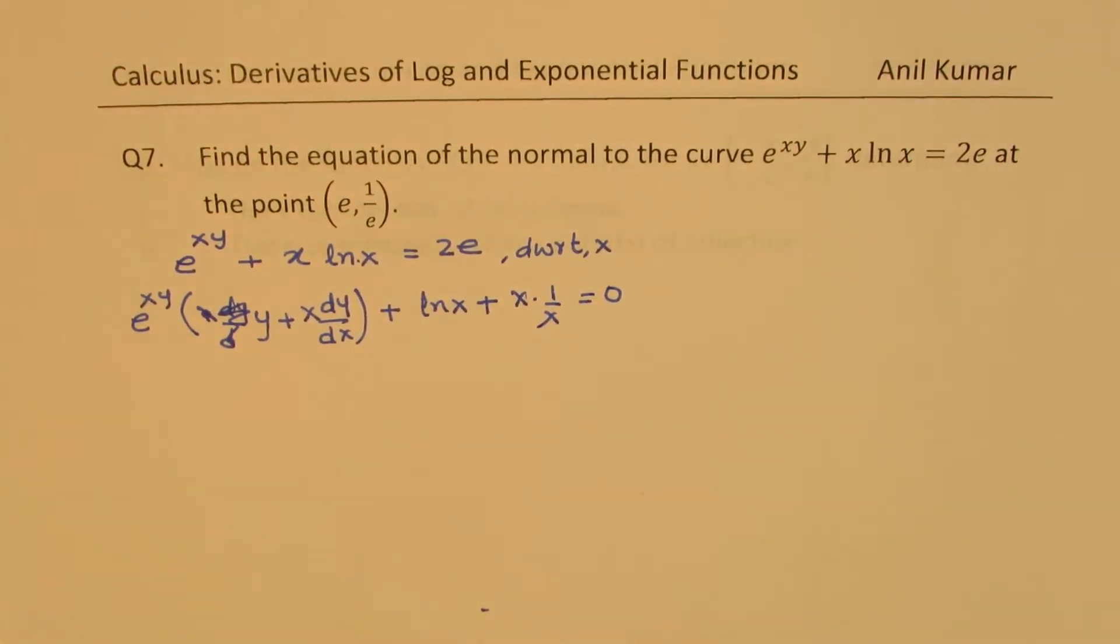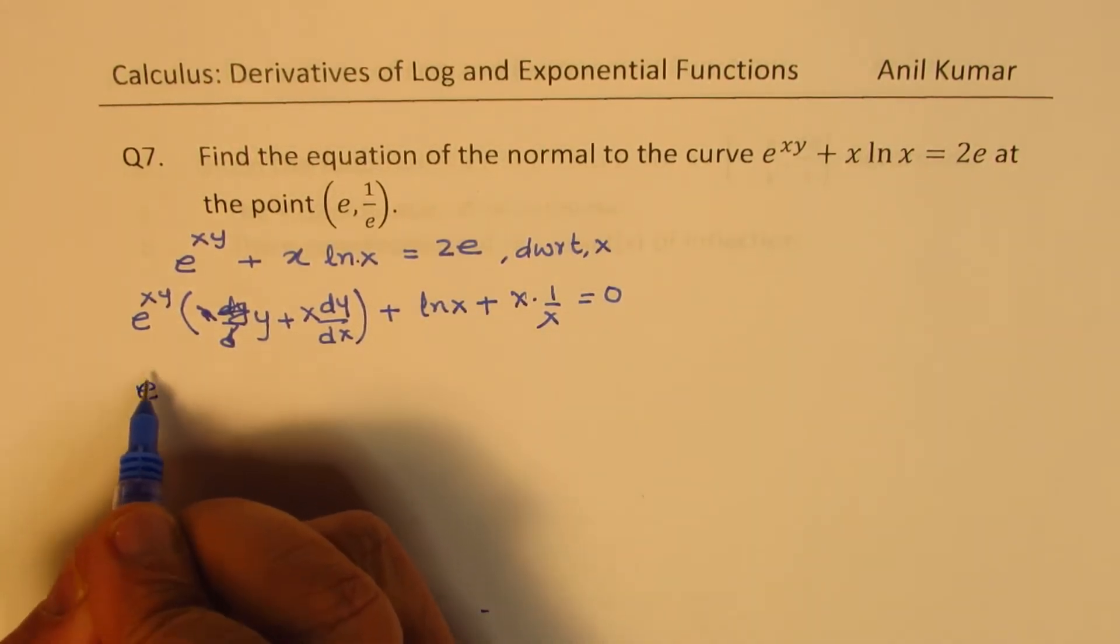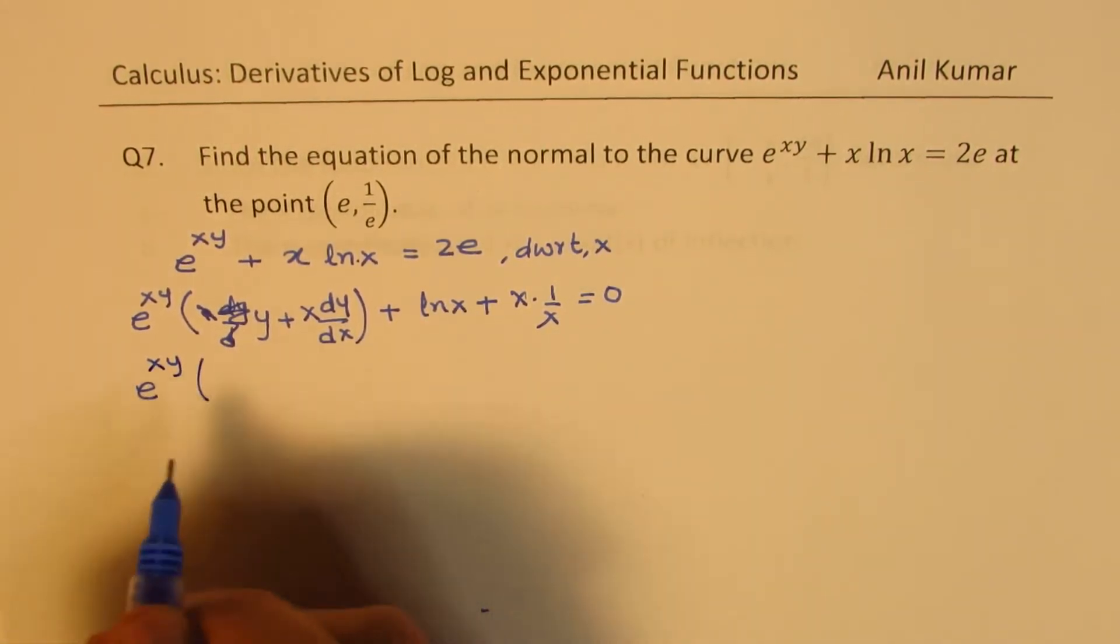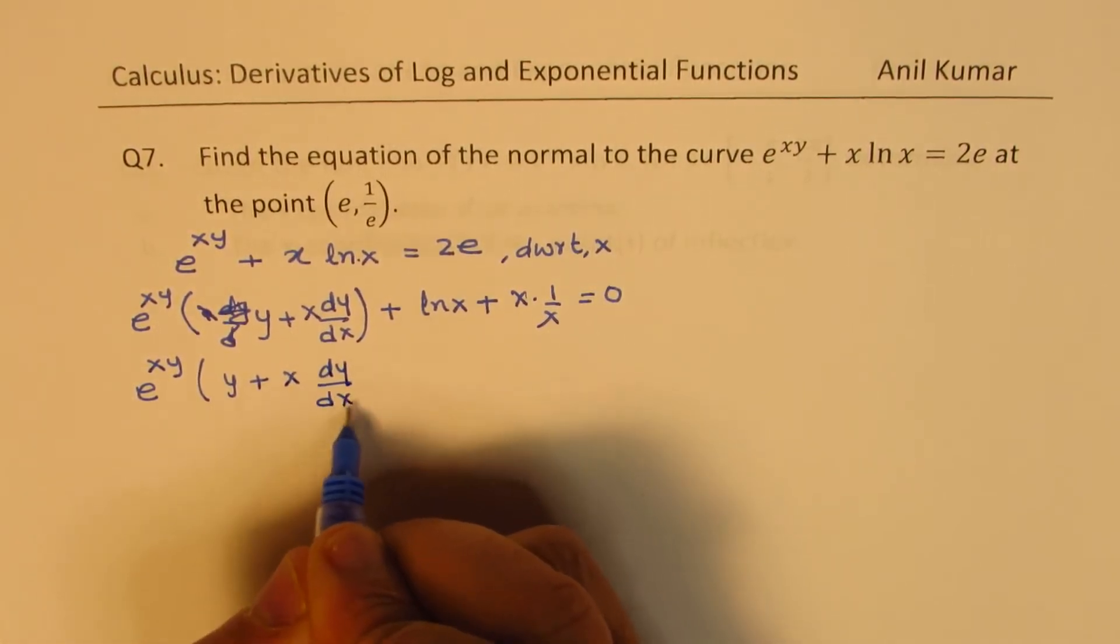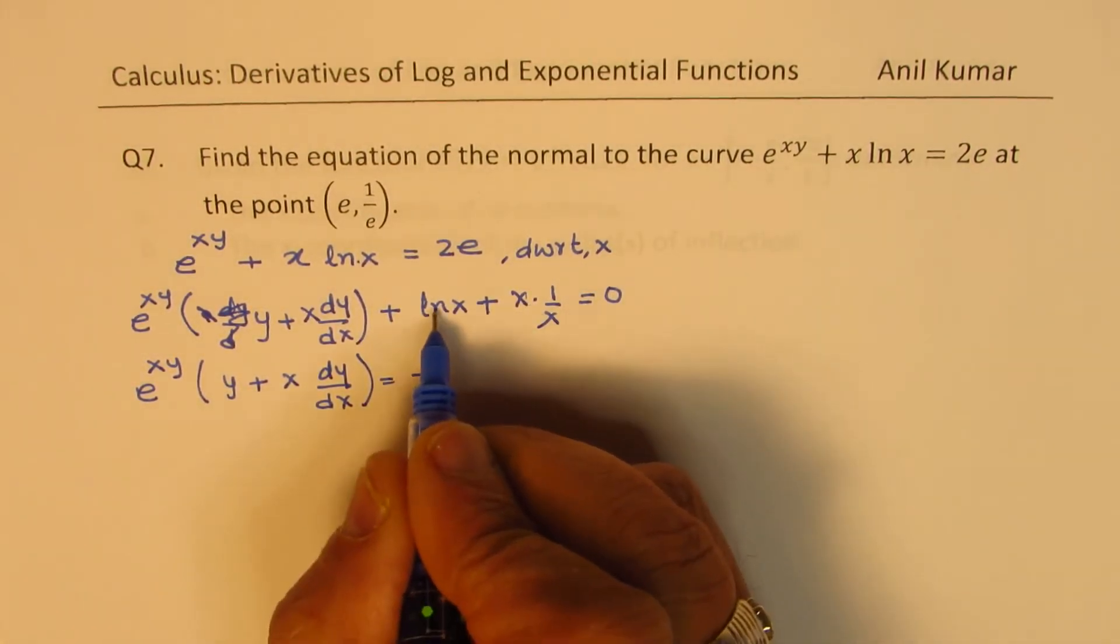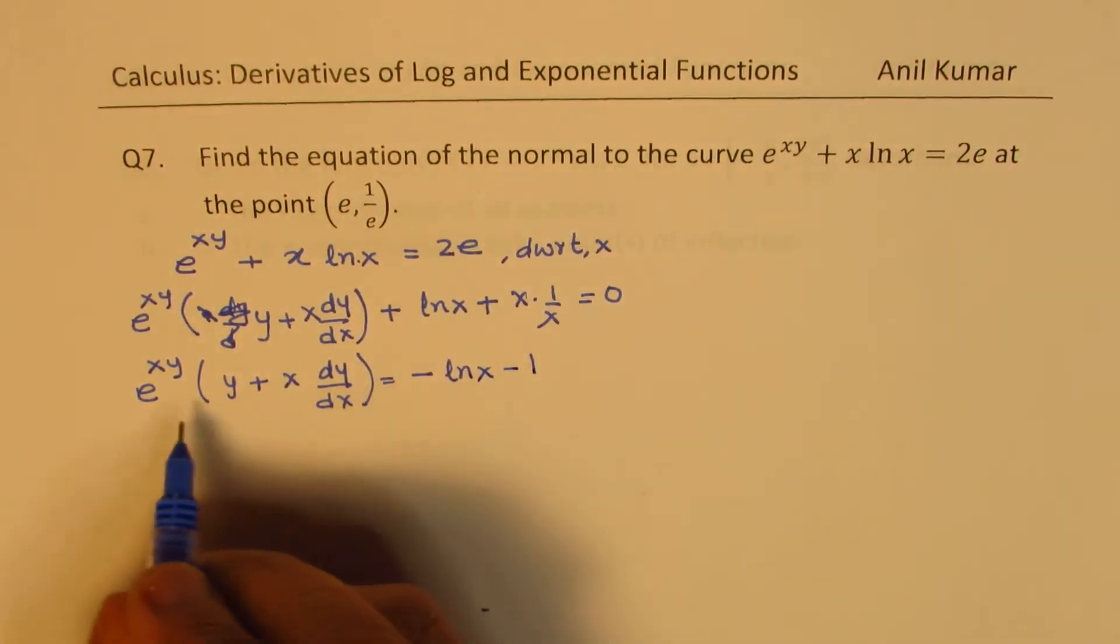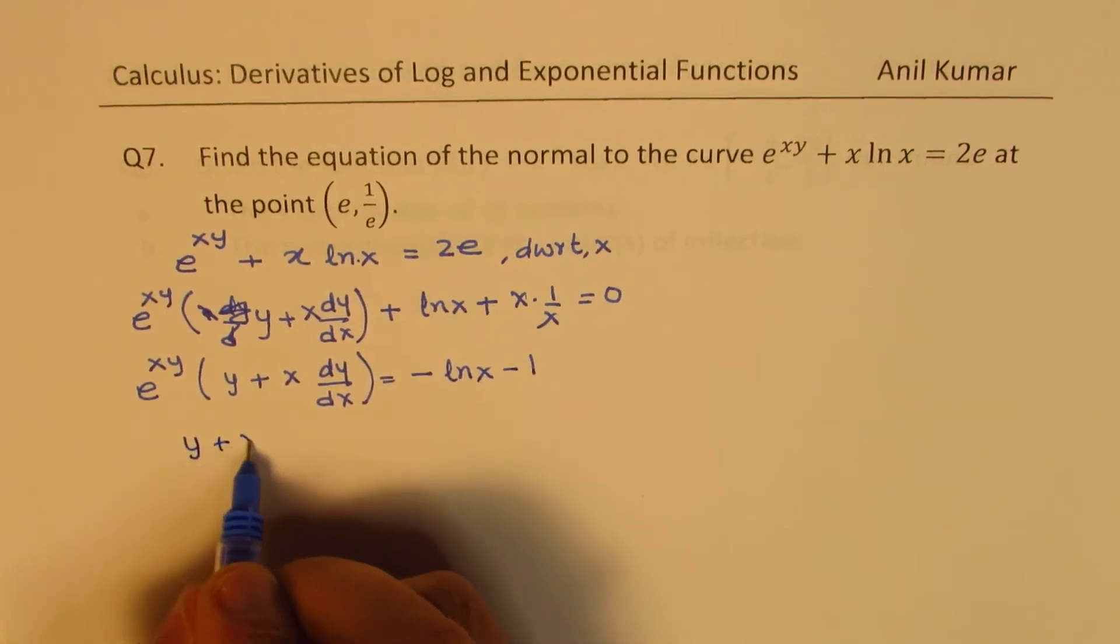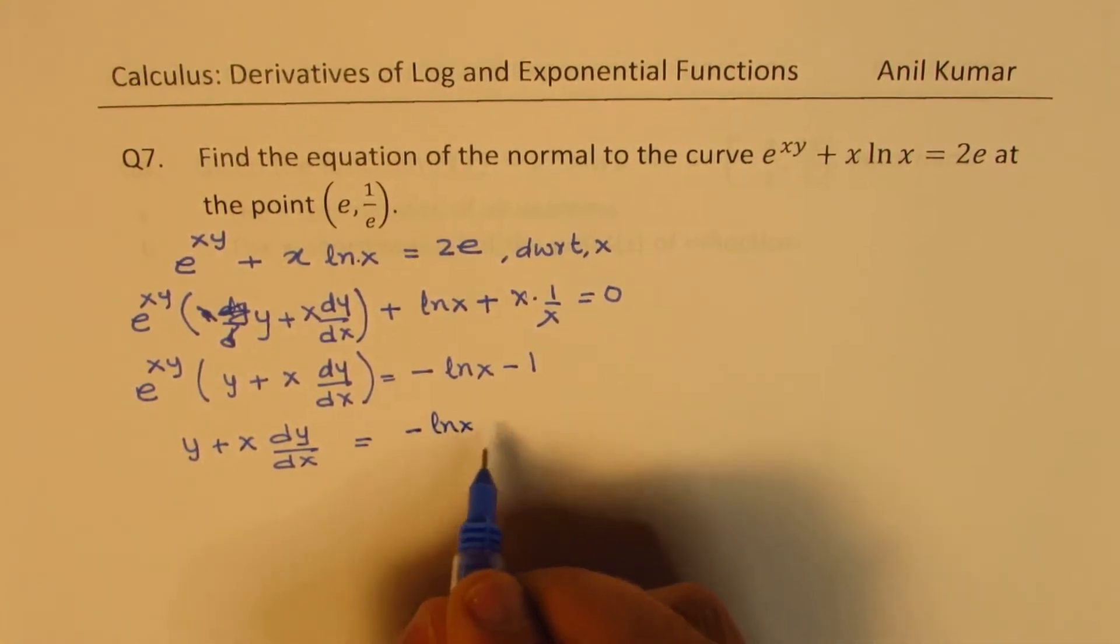Now we need to isolate dy/dx. We can take these terms to the right. So we get e^(xy) times (y + x dy/dx) equals negative ln(x) minus 1. Therefore, y + x dy/dx equals -(ln(x) + 1) / e^(xy).